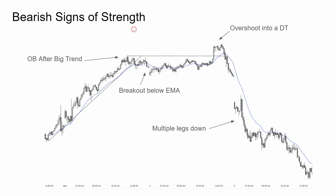Bear signs of strength. See a big bull channel and the outside bar after a big trend — it's hard to see, but this black bar right here trades above the bull bar and below, then goes sideways for a few legs. It breaks below the EMA but then goes sideways again. Bulls overshoot the previous high, creating a double top, and they get multiple legs lower for a few days — about two or three days for this to play out.